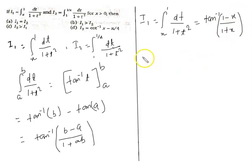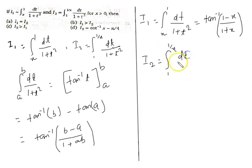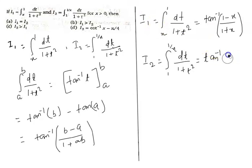Now for I2, the limit is 1 to 1 by x of dt by 1 plus t squared. We write tan inverse t and put the upper limit 1 by x and lower limit 1. So we get tan inverse of (1 by x minus 1) divided by (1 plus 1 over x).